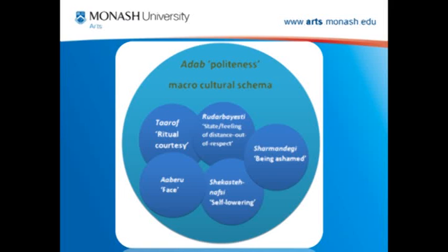I have tried to develop a working scheme for the study of pragmatic meaning in Persian. If you think of the macro-level schema of what we call ADAB, there are certain cultural schemas embedded within this macro-cultural schema — including the cultural schemas of Tarof, Rudarbayasti, Sharmandegi, Shekasta-nafsi, Aaberu, and so on.